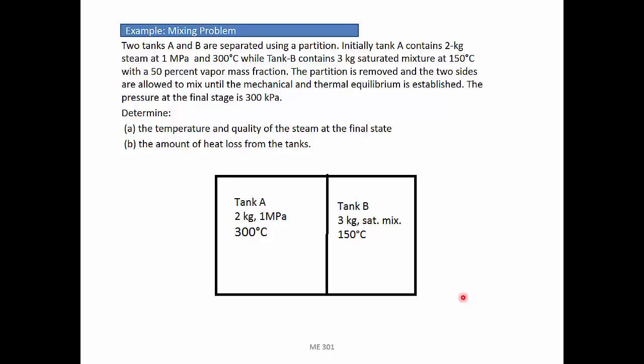While tank B contains 3 kg of saturated mixture at 150 degrees C, with a 50% vapor mass fraction. The partition is removed, and the two sides are allowed to mix until the mechanical and thermal equilibrium is established.